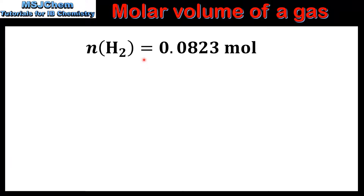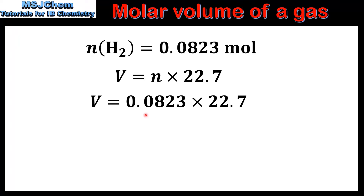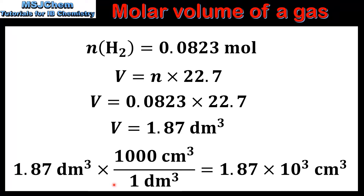Now we'll convert the amount in moles of hydrogen to volume. Using the equation volume equals amount in moles multiplied by 22.7: that's 0.0823 multiplied by 22.7, which gives a volume of 1.87 decimetres cubed. In the final step we convert from decimetres cubed to centimetres cubed: 1.87 decimetres cubed is equal to 1.87 × 10³ centimetres cubed, which is the volume of hydrogen gas produced in the reaction.